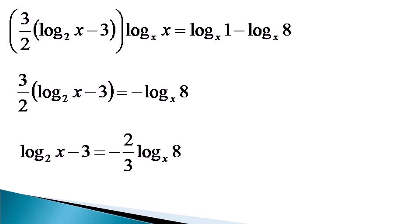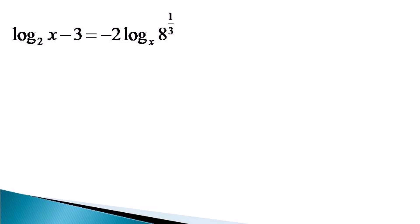We take 3/2 to the right hand side to make the right hand side equal to minus 2/3 · log 8 to the base x. Now, we take 1/3 as the power of 8, so the right hand side becomes equal to minus 2 · log (8 raised to the power 1/3) to the base x. This 1/3 comes from the 2/3 which was multiplying earlier on the right hand side.